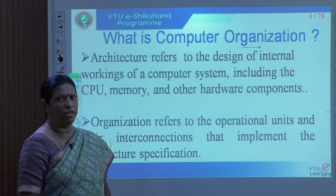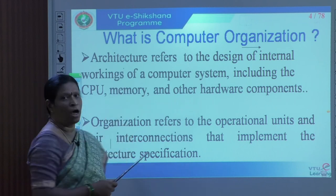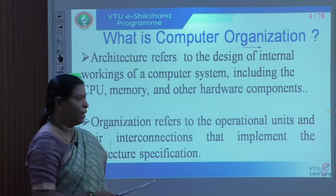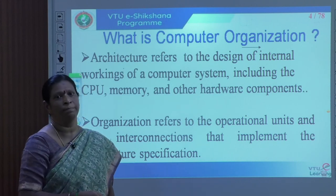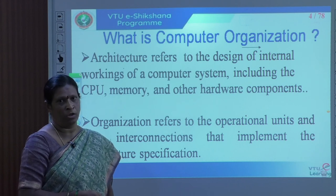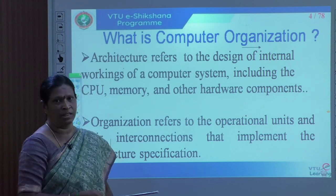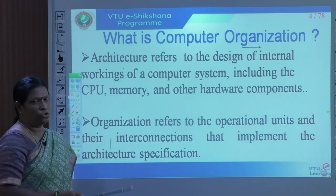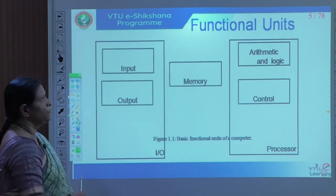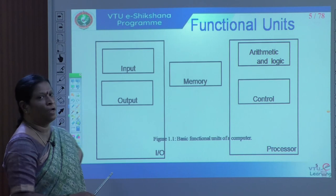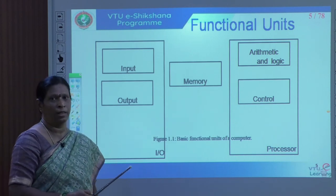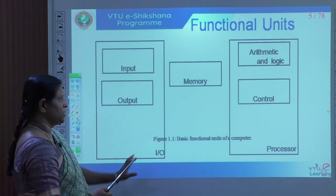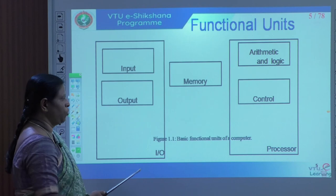Computer organization refers to the operational units and their interconnections that implement the architectural specifications. To differentiate: computer architecture tells us what we can design, while computer organization tells us how to implement a particular concept — how to implement the design specifications of the architecture. Having defined computer architecture, we now move to the functional units of a computer, shown in the following block diagram.